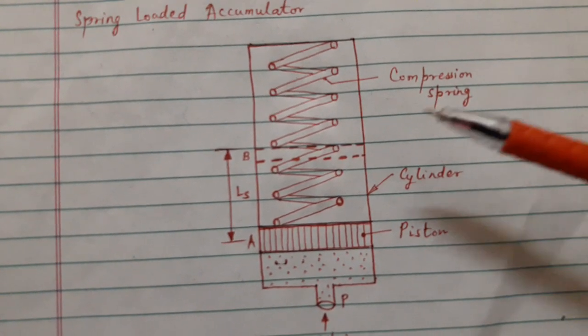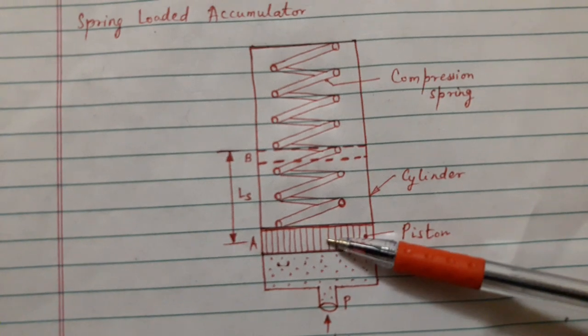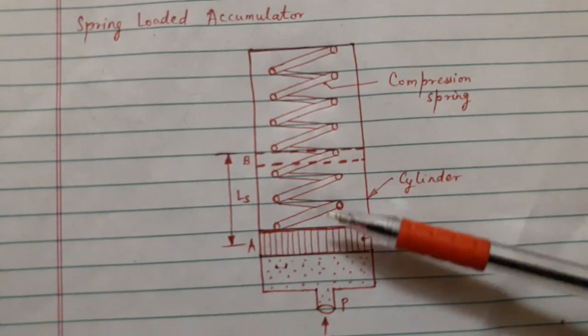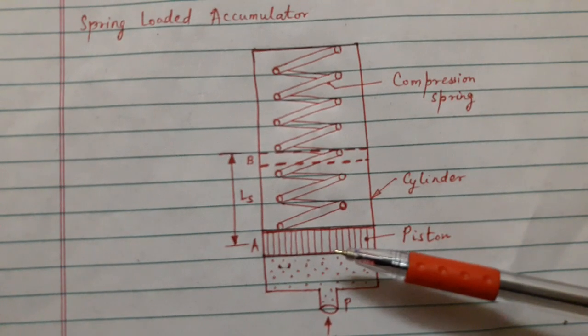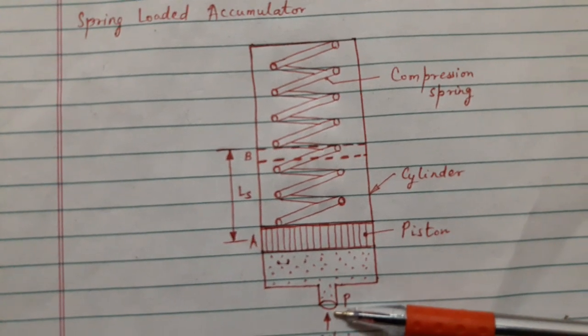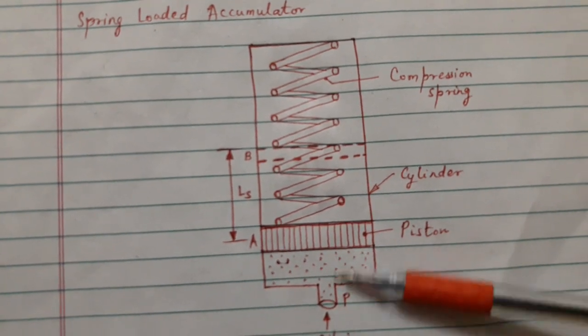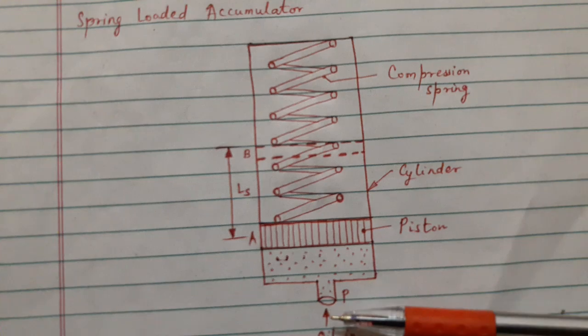In this accumulator there is a spring loaded piston which moves up and down in the cylinder. The oil under pressure usually from the pump enters into the cylinder through port P.